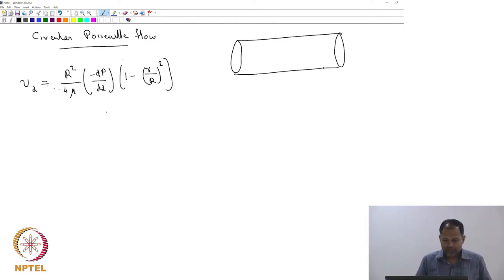We will analyze this equation a little bit. The first thing we want to do is find out what is the maximum velocity. Can you find what is the maximum velocity? v_z max equals minus dp/dz times r² divided by 4μ, correct.